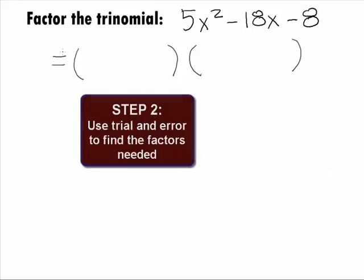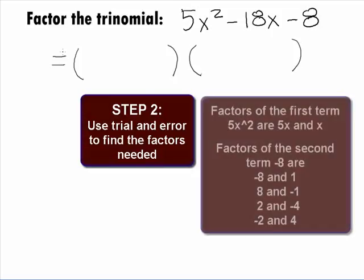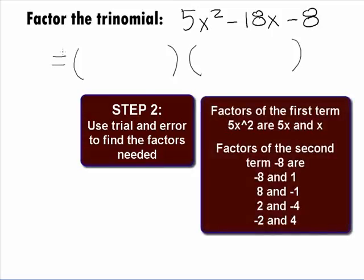In Step 2, we are going to use a process of trial and error to help us figure out what terms need to go into our binomial factors. In the first terms of the binomials, we need factors of 5x squared. This would have to be 5x and x.